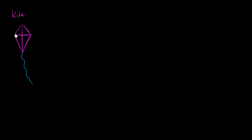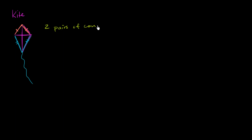One way to think about a kite is that it looks like it has two pairs of sides that are congruent to each other. For example, this side and this side need to be congruent to each other — they touch each other and have a common endpoint. So you have one pair of congruent adjacent sides sharing a common endpoint, and then another pair of sides that are also congruent to each other and adjacent, sharing a common endpoint. So one definition of a kite is two pairs of congruent sides where the congruent sides are adjacent.